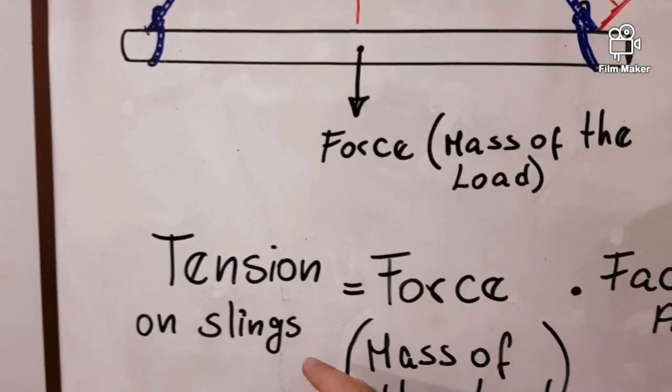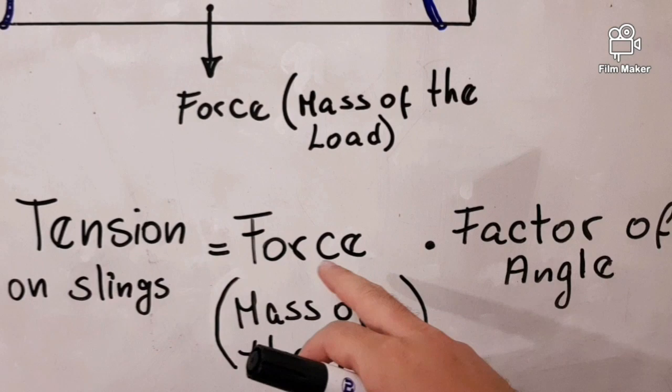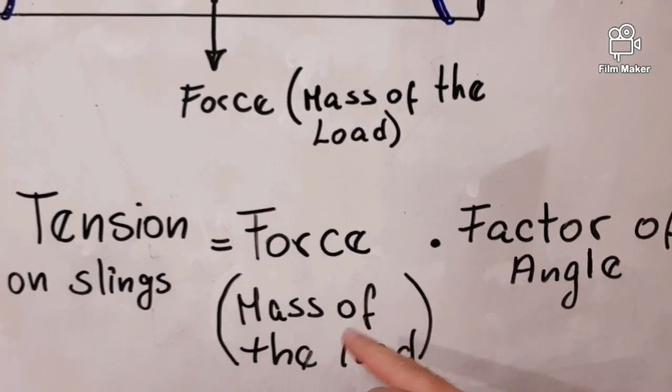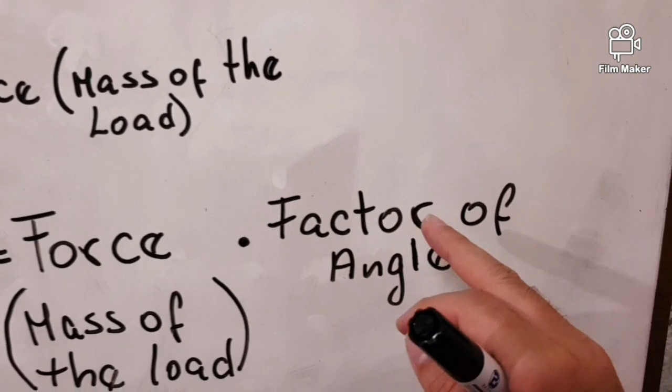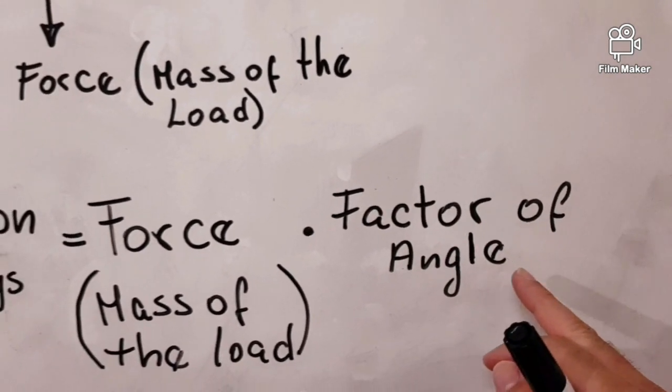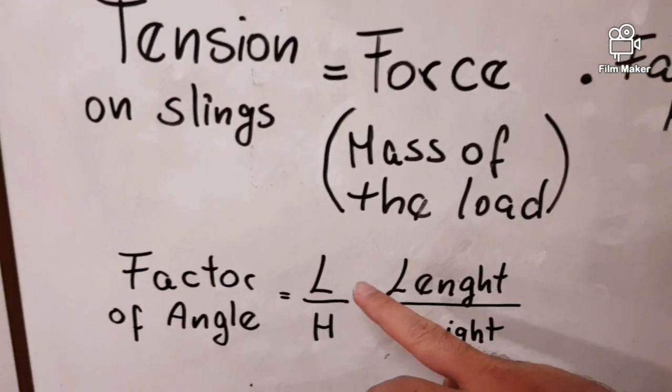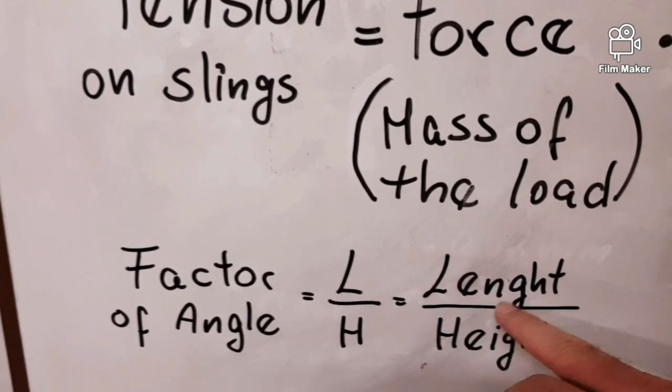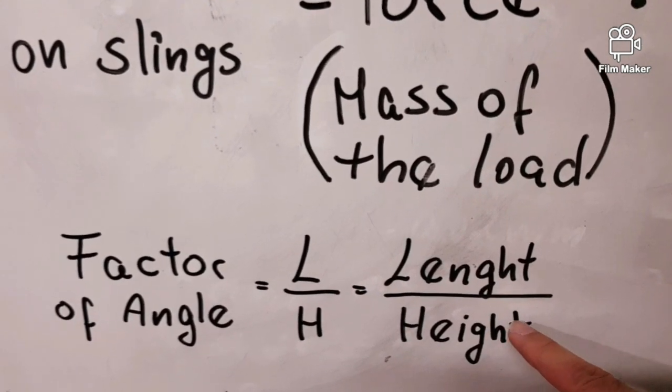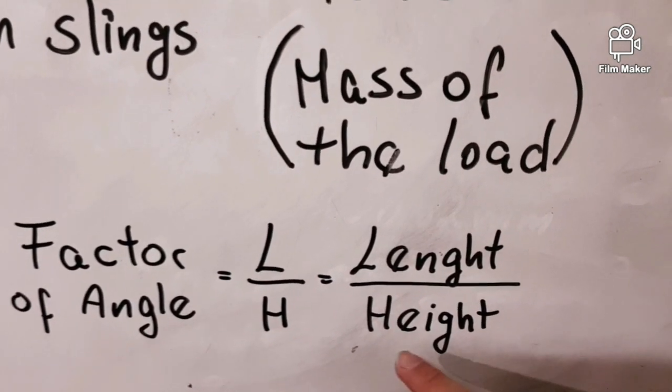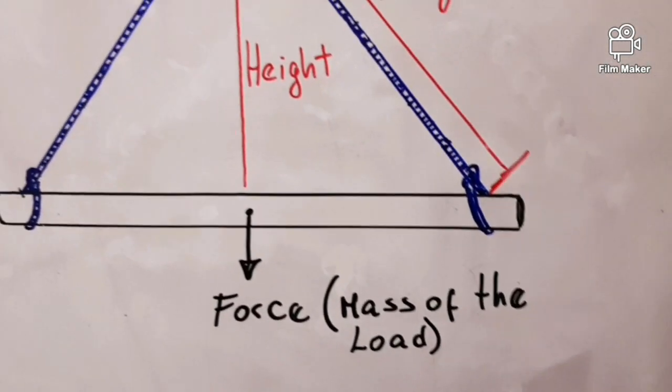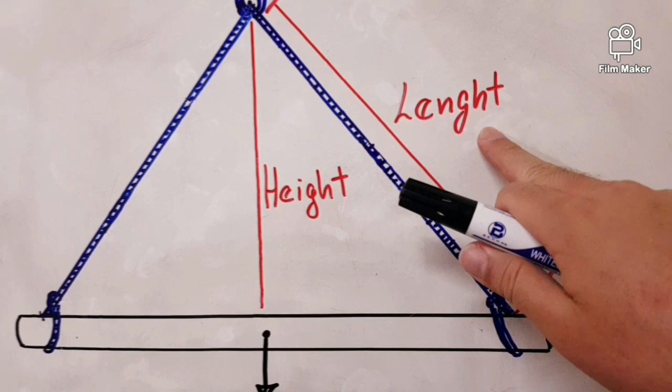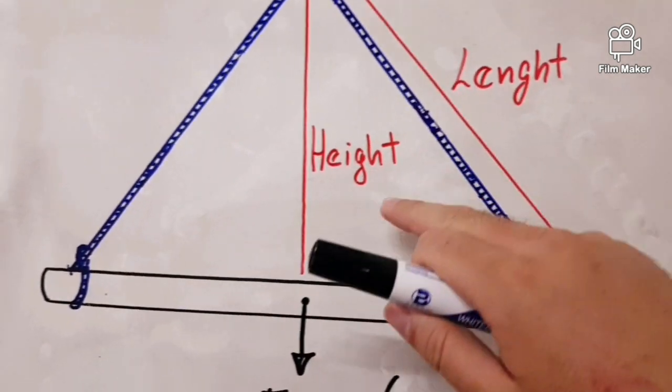We use this equation: tension on slings equals force (mass of the load) multiplied by the factor of angle, which is, as we said, the length divided by the height.